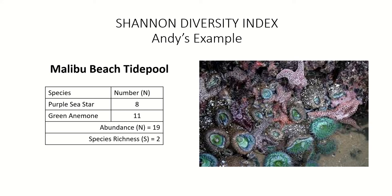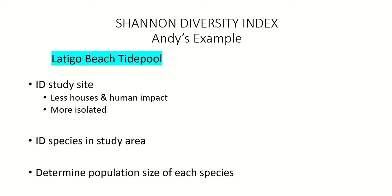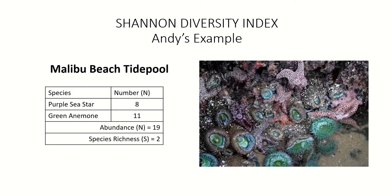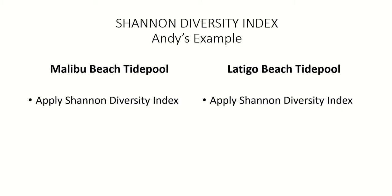There were two different types of species — that's called species richness. He had a second study site called Latigo Beach, on the same shoreline but further down, away from houses and human impact — more isolated and harder to get to. He did the same thing: counted species and types in a meter-by-meter plot. He found two orange anemones, seven purple urchins, three white anemones, and three slimy army-green anemones — four different species, 15 total individuals. It looked more diverse, but he had to prove it using the Shannon Diversity Index.